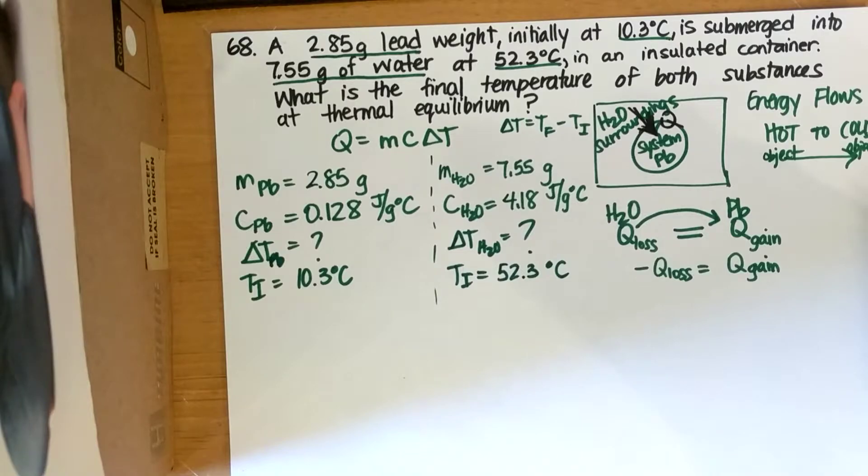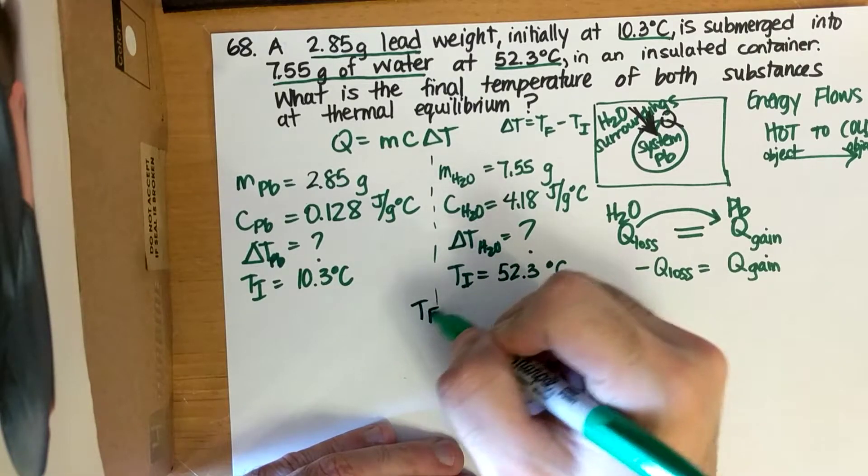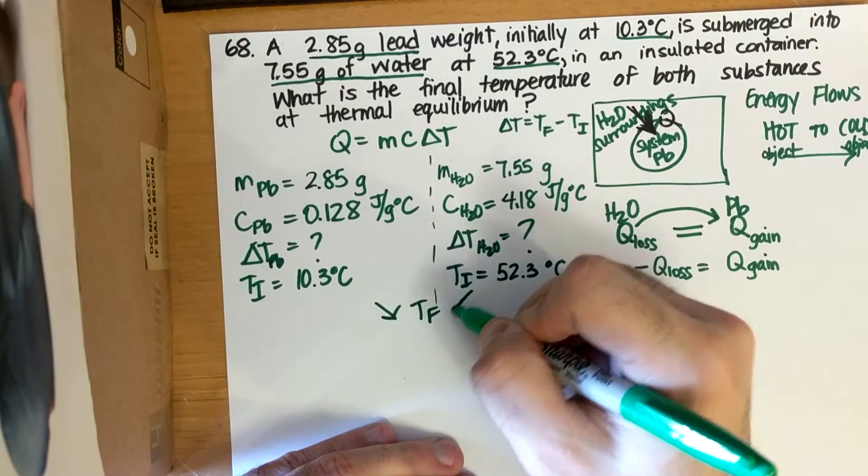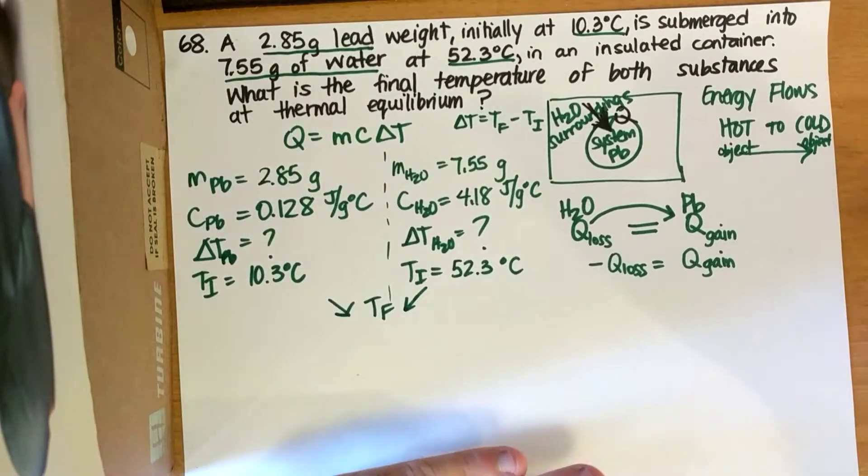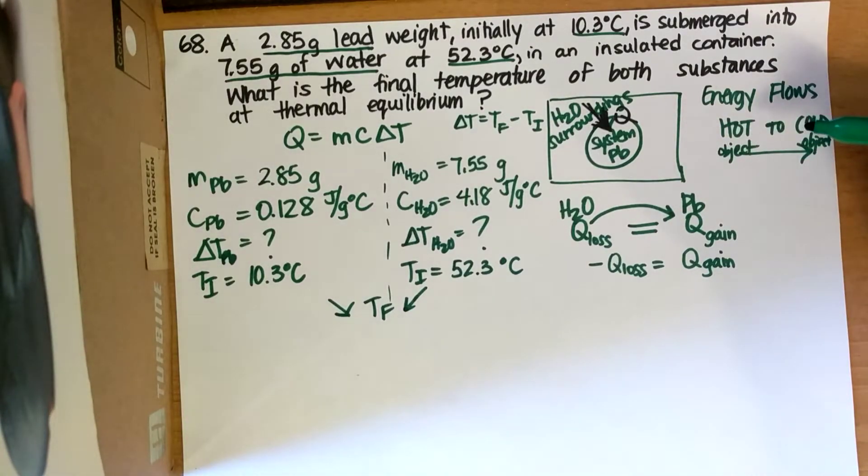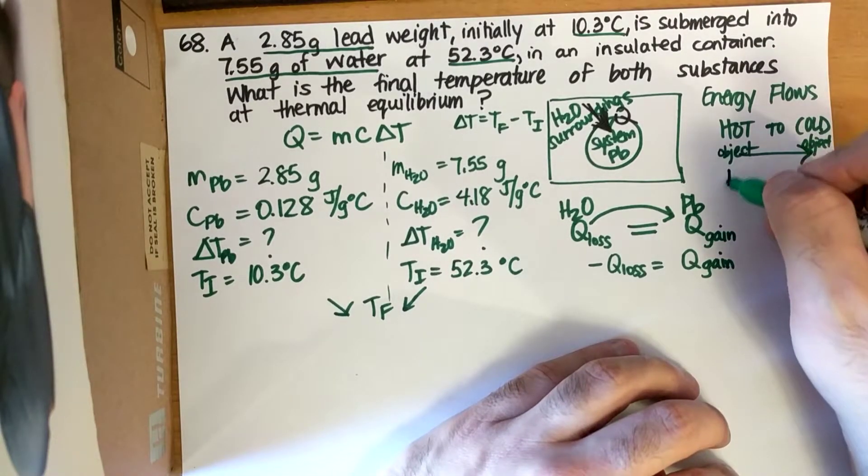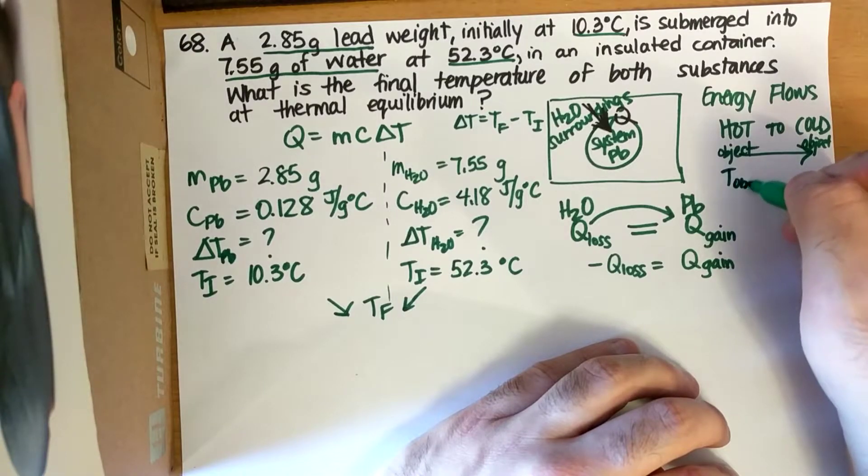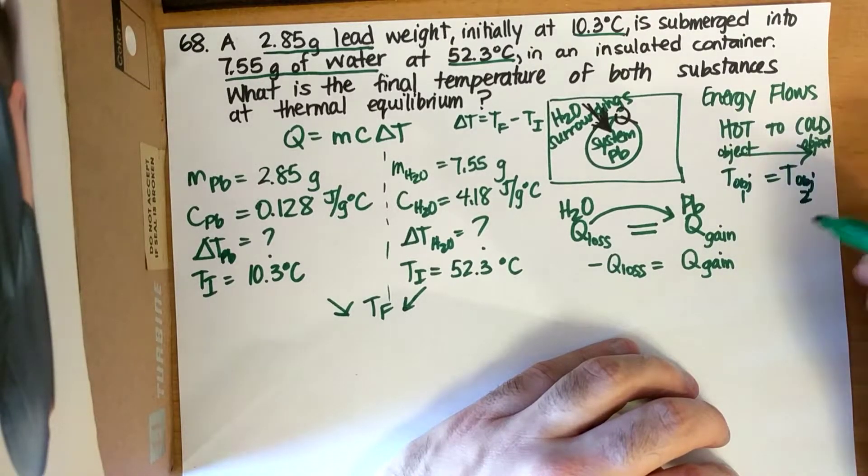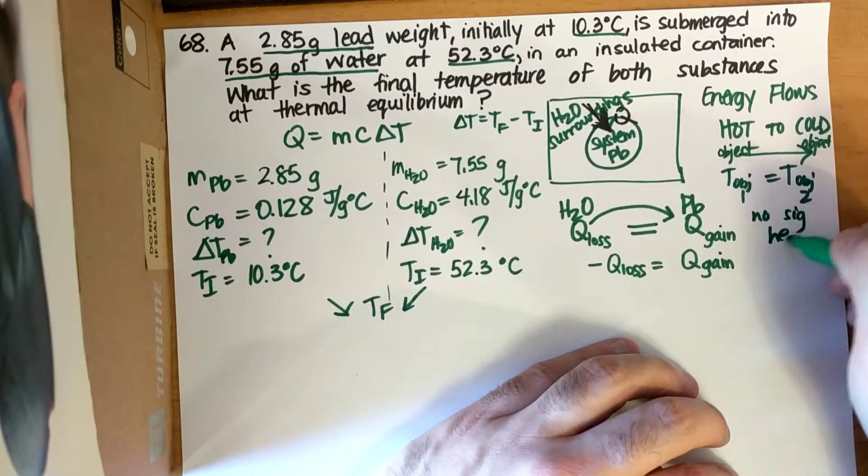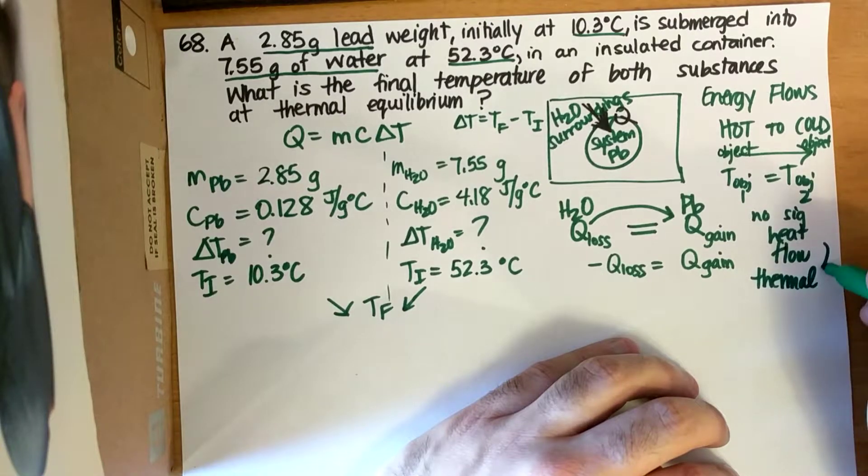Okay? Now, in order to have thermal equilibrium, both the final temperatures must be equal. They are both going to reach the same final temperature. How do I know that's going to be thermal equilibrium? Well, again, for energy flow, it needs to go from a hot object to a cold object. If both these objects are at the same temperature, there's not going to be a significant heat flow. So, when T of object 1 is equal to T of object 2, there's no significant heat flow. And we call this thermal equilibrium.